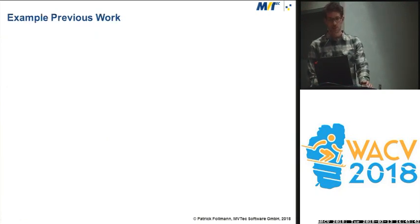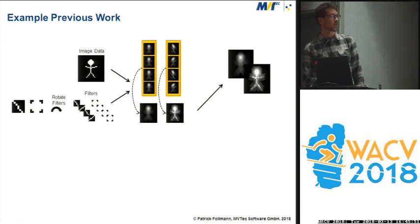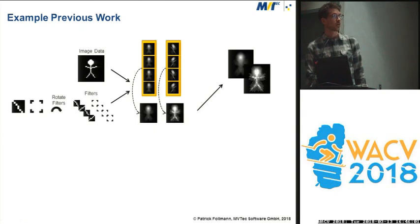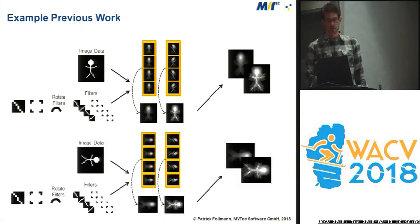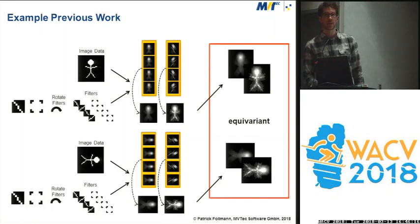Here's a dummy example. We have our two dummy filters, and we rotate them with 90-degree rotations four times, getting four different feature maps for each filter. If we pool over these four feature maps, we get two output feature maps. If we rotate the input image and do the same, we again end up with two feature maps that are quite similar to the other ones, but they are not invariant — only equivariant.